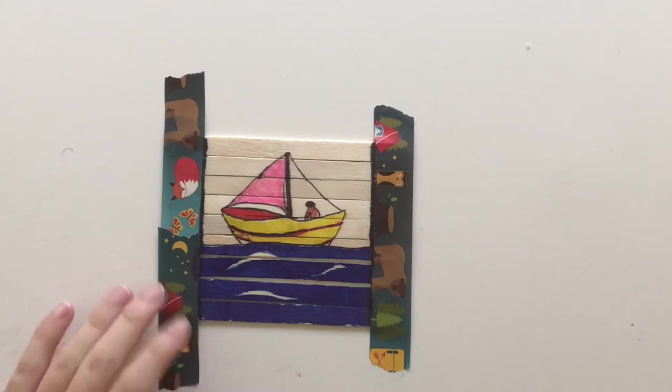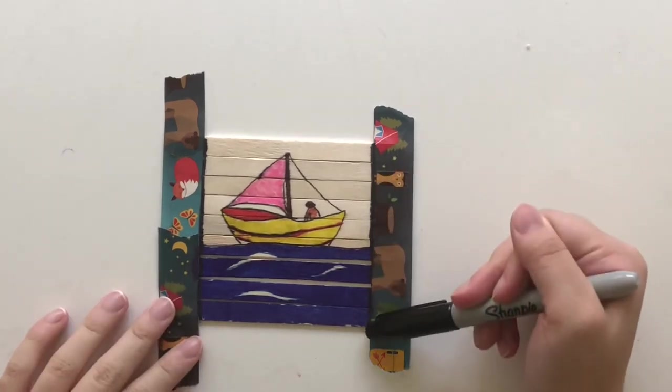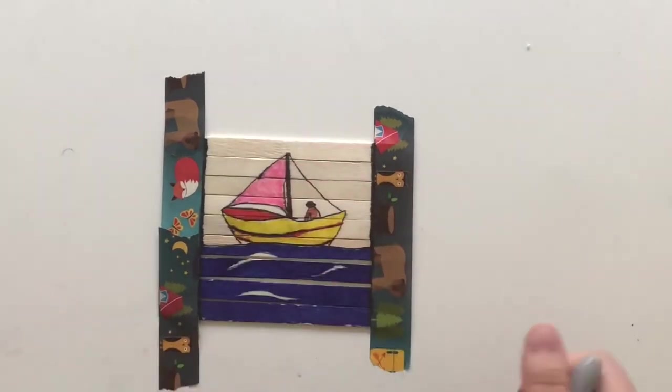When you're done coloring, use a black pen and trace along the edges of the tape. This will create an outline.